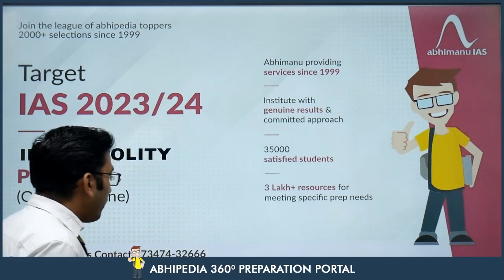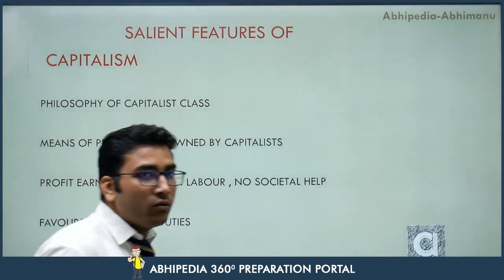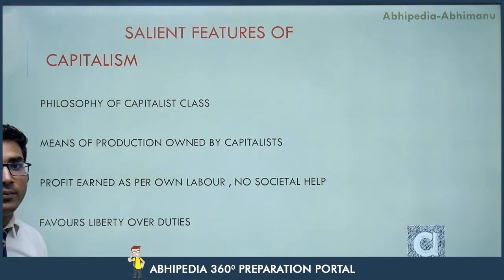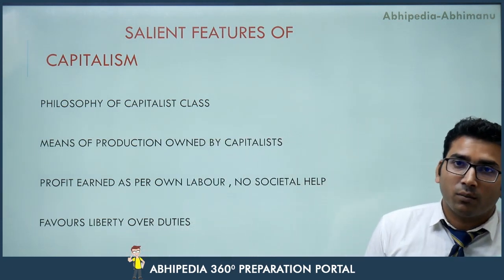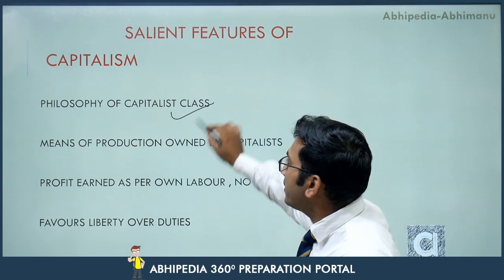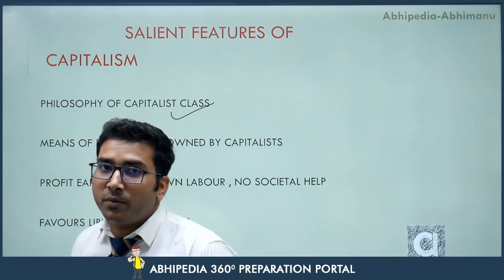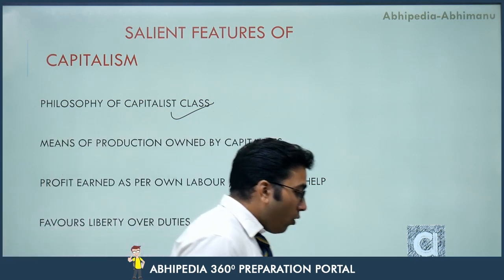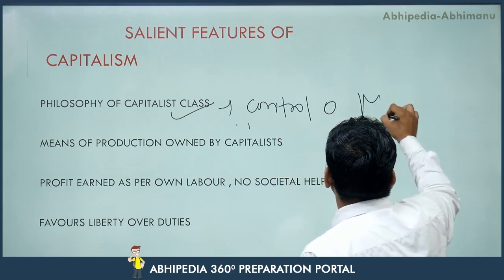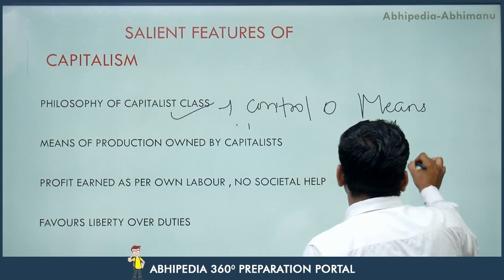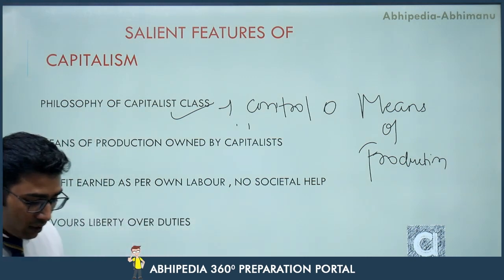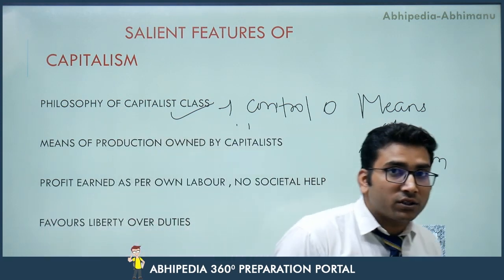Now let's continue on our topic — capitalism versus socialism. In the first slide we will be dealing specifically with capitalism. The first salient feature is that it is a philosophy of the capitalist class — the class of elites, the richest people who have control over the means of production.